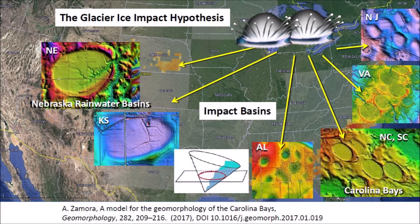The formation of the Carolina Bays by impacts has been considered since the 1930s when the bays were first photographed by aerial surveys. But today, mainstream geologists attribute the formation of the bays to gradualistic wind and water mechanisms which operated over thousands of years. This conclusion is based mainly on the result of dating the terrain by Optically Stimulated Luminescence or OSL.